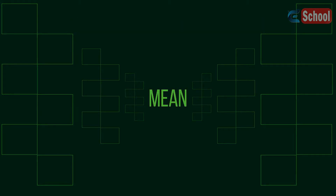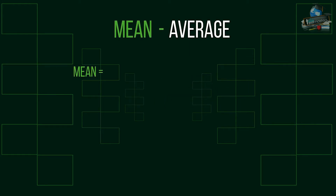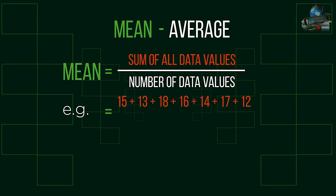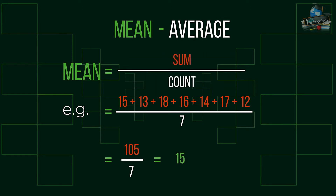Mean, alongside mode and median, is a form of average and is found by dividing the sum total of values by the number of values themselves. This is sometimes referred to as sum over count.